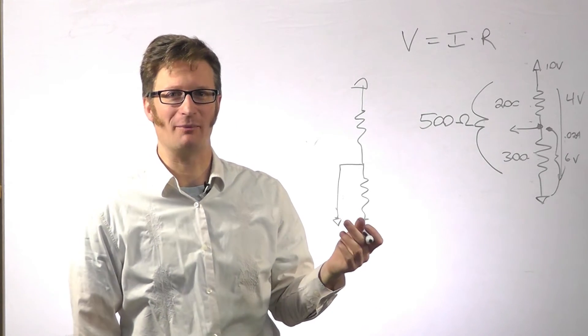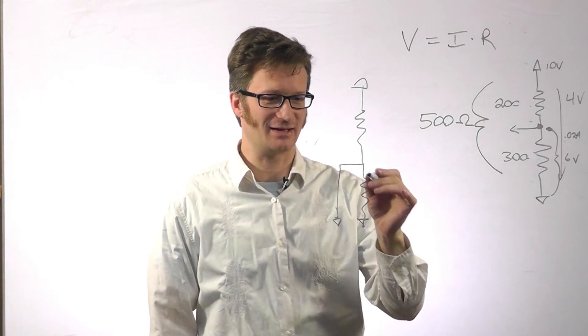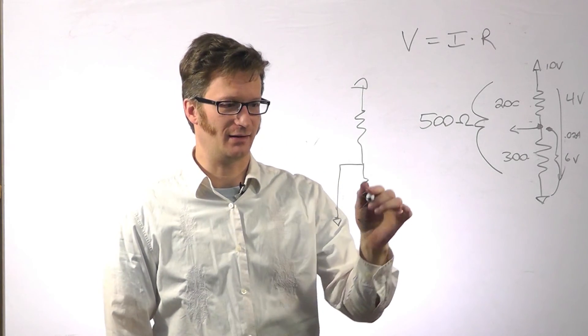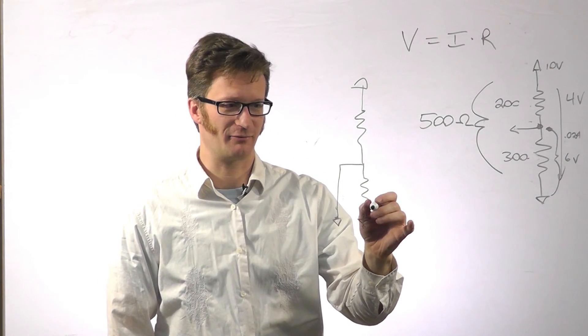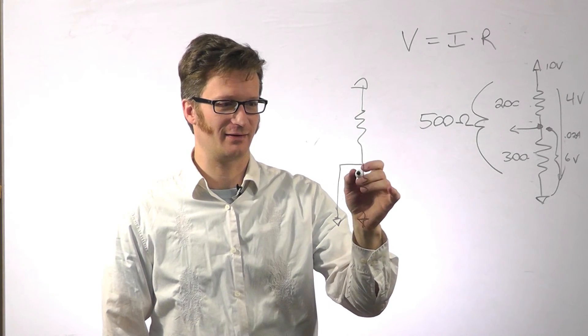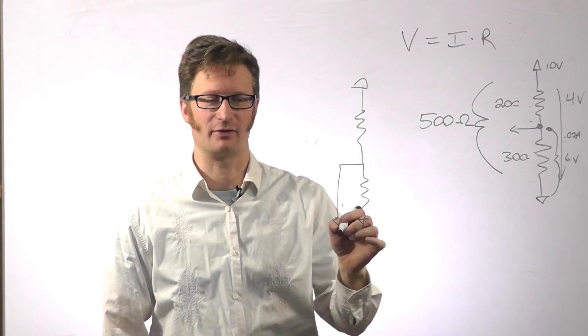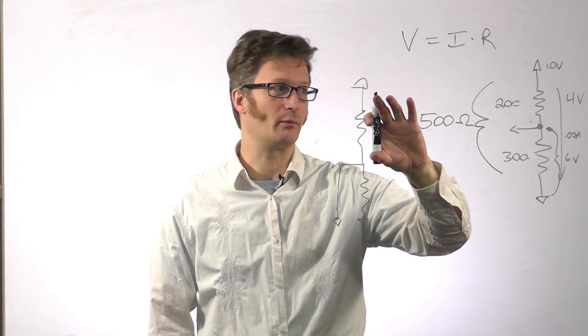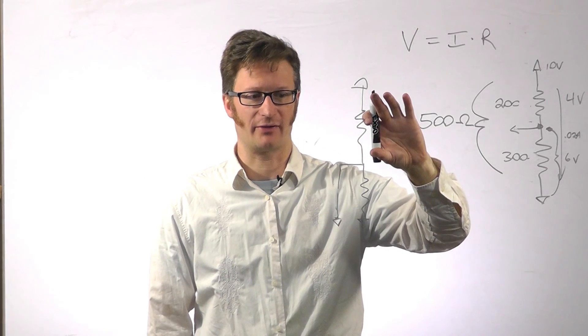But essentially, if you've shorted across something, current will be going through here, but it's not going to be anything compared to what's going through your wire. And so you're going to end up with the full 10 volts being dropped across here.